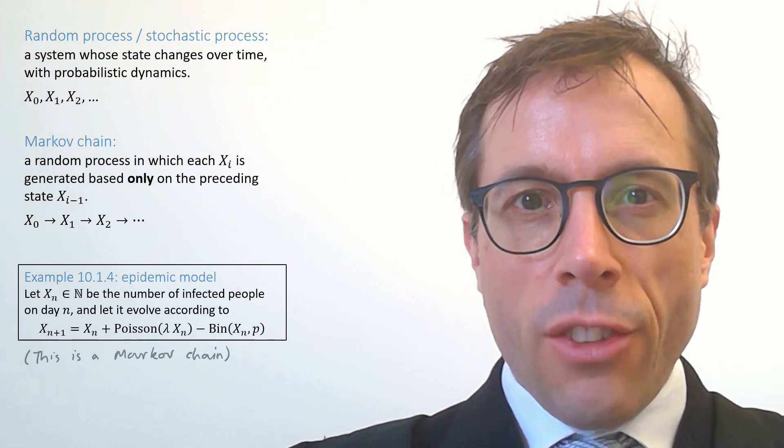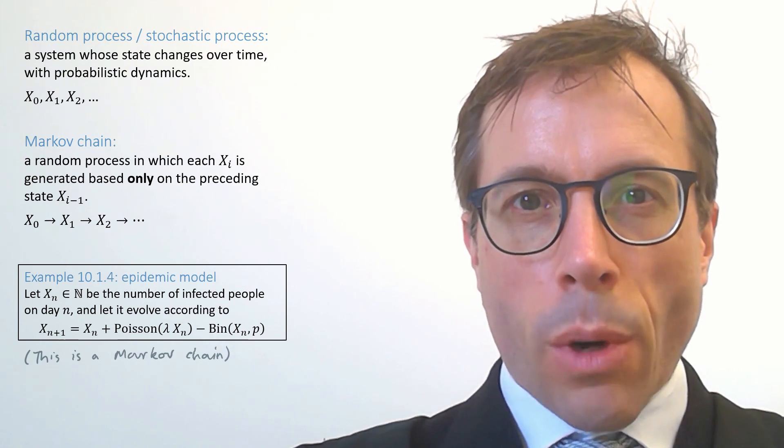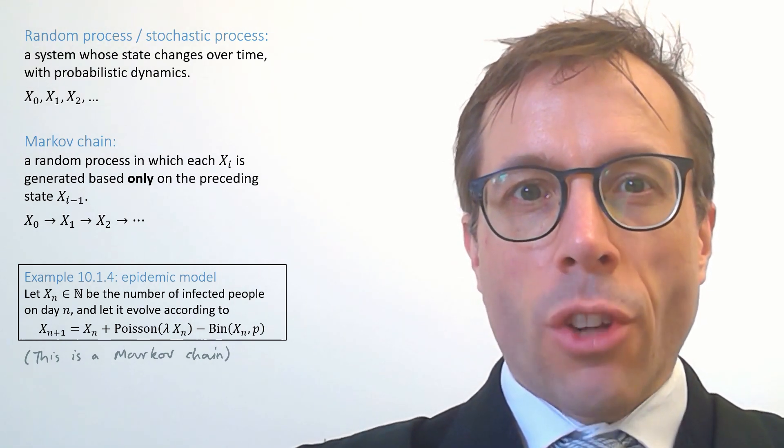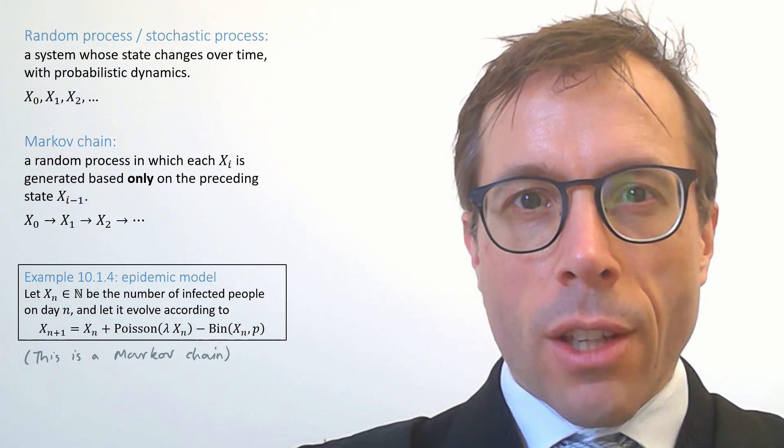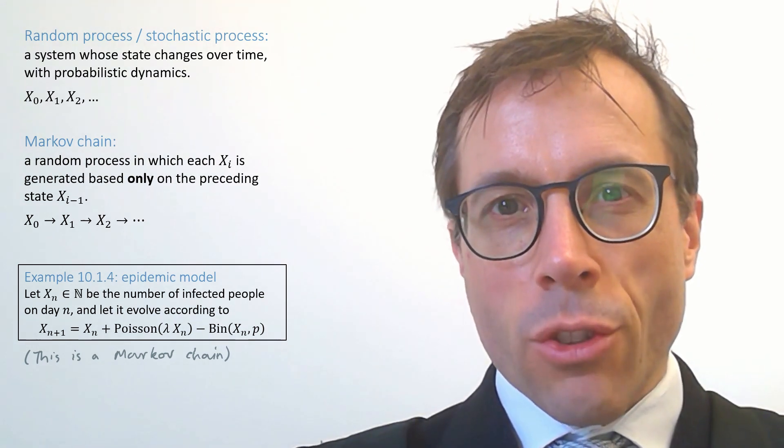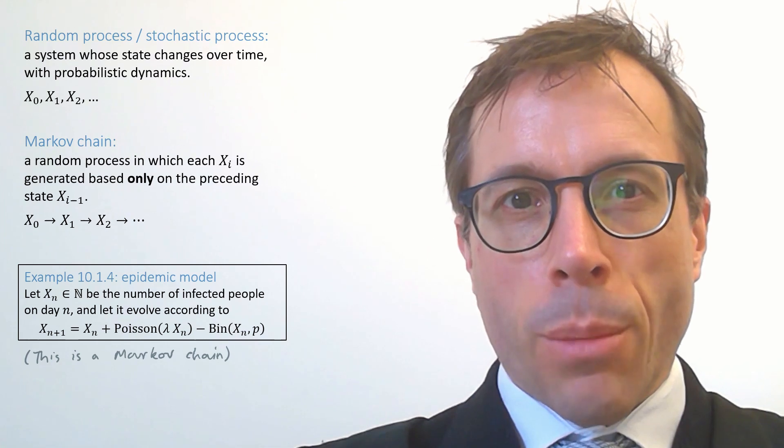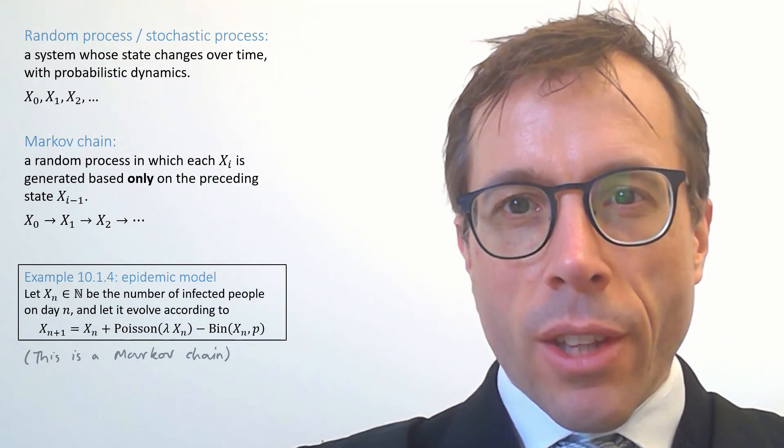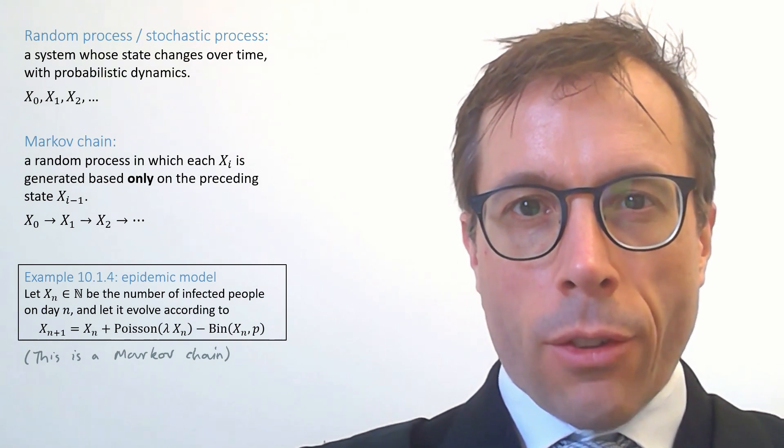What makes Markov chains easy to reason about is this crucial property, their defining feature, that each state is generated based only on the preceding state. They're like finite state automata which you learnt about in your first year of computer science. The idea is that the state is meant to encapsulate everything that's relevant for deciding what will happen next.